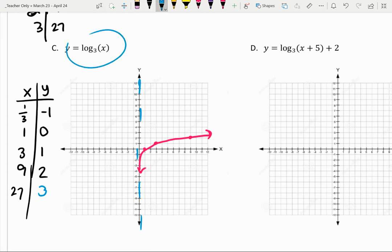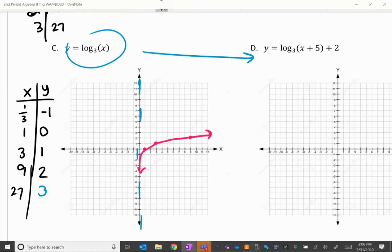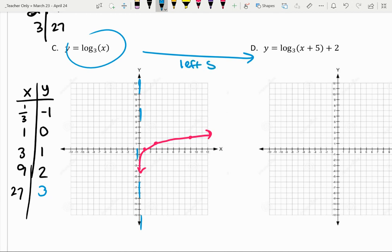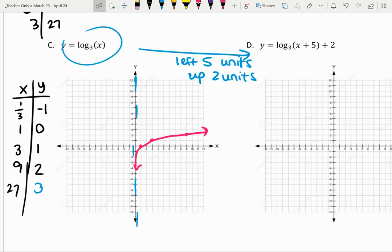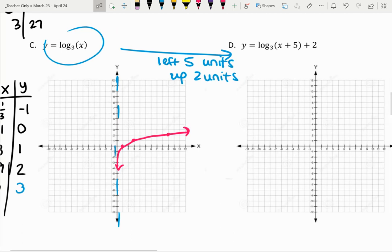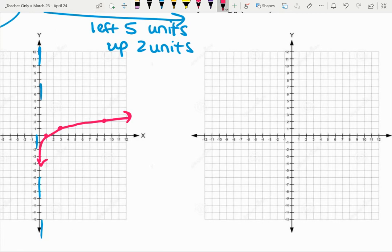And then once again, now that I have this parent function for the logarithm, I can look at this transformation here. That plus 5, remember, is going to go to the left 5 units. It's the opposite direction. And up 2 units. So I could look at all of the points that I have for my parent function log base 3 of x and just move them accordingly here. So for instance, this is 9, 2. I'm going to move left 5 units and up 2 units. So that will be 4, 4. And then I've got 3, 1. Left 5 units will be negative 2. And then up 2 units will be negative 2, 3.